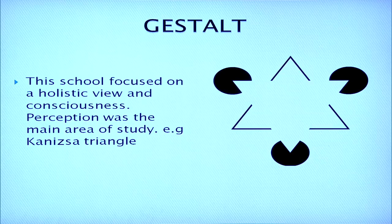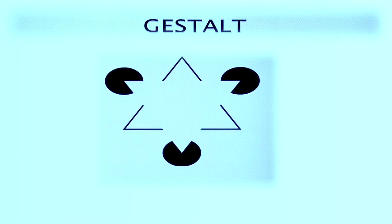Let us take one example — the Kanizsa triangle, which is in front of you. If we look at this Kanizsa triangle, we perceive that there are two triangles and three circles. But this is actually not true, because the picture is not complete. The Gestalt school of thought focused on how individuals perceive — whatever we perceive, we try to perceive as a whole, and we try to fill in the gaps. We will understand about these schools in detail in the future.